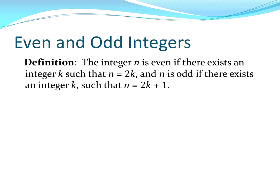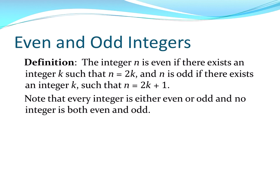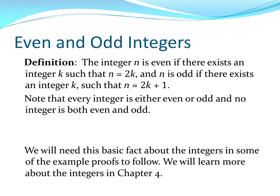All right, so that will be the definition. Whenever we encounter an even integer or an odd integer, we'll want to use this definition. And again, every integer is either even or odd, and no integer is both even and odd. Okay, so we'll use these definitions in proofs to follow.